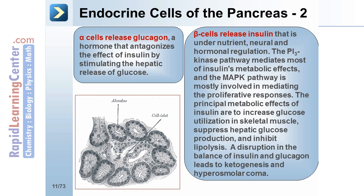The principal metabolic effects of insulin are to increase glucose utilization in skeletal muscle, suppress hepatic glucose production, and inhibit lipolysis. A disruption in the balance of insulin and glucagon leads to ketogenesis and hyperosmolar coma. Finally, it is the delta cells that release somatostatin.